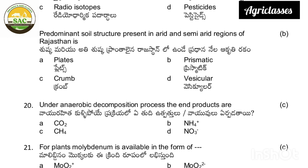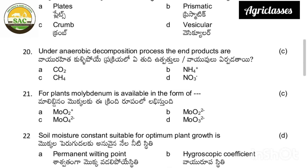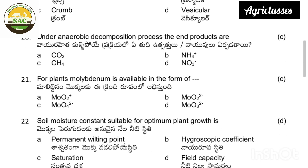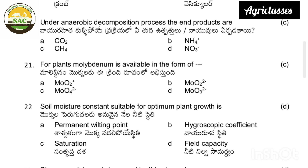The predominant soil structure present in arid and semi-arid regions of Rajasthan: plates, prismatic, crumb, or vesicular. The correct answer is prismatic. Under anaerobic conditions, the products include carbon dioxide, ammonia, methane, or nitrates. The correct answer is methane (CH4).